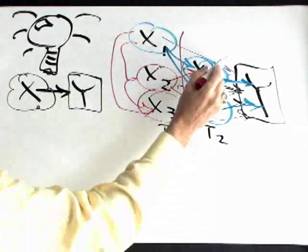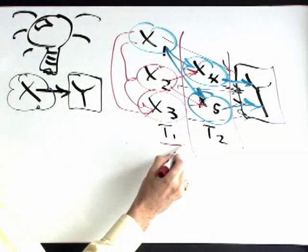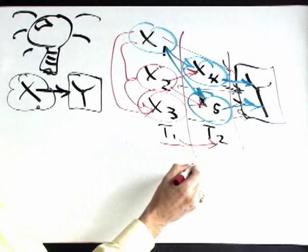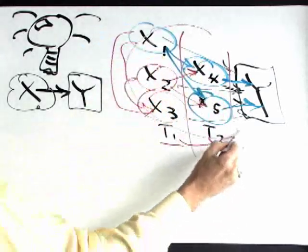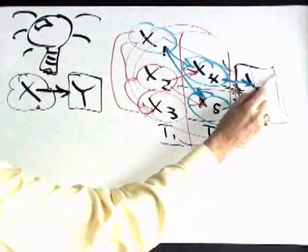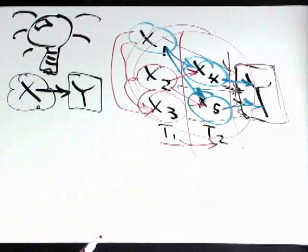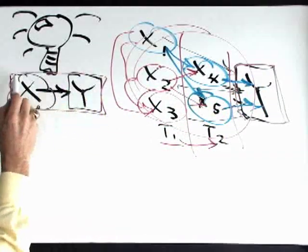And then if you realize that over time, these variables happen first, they influence the second set, and then collectively, the whole system influences the outcome. This is a very different model than this simple view.